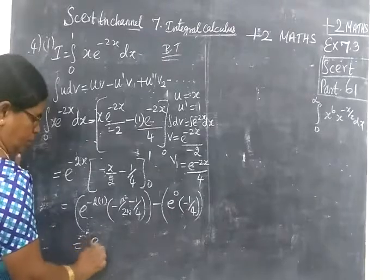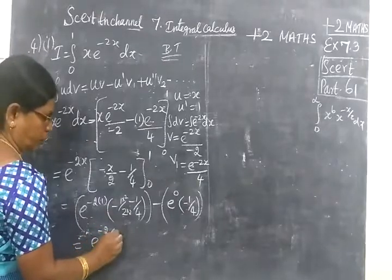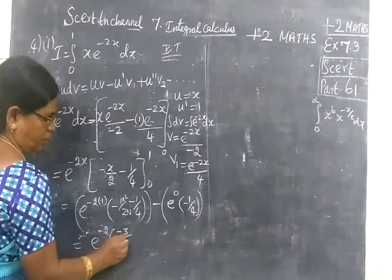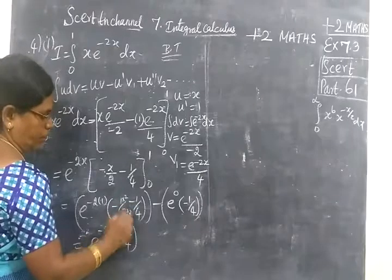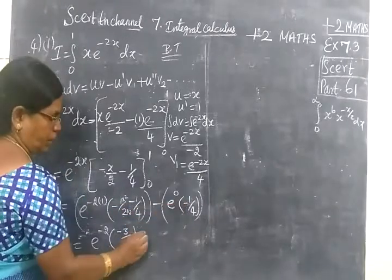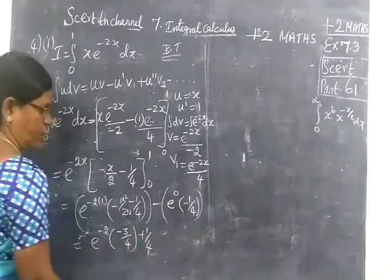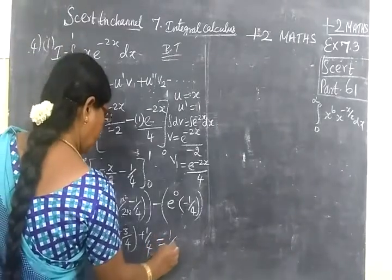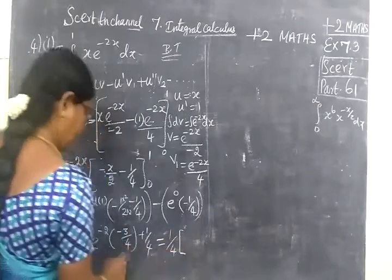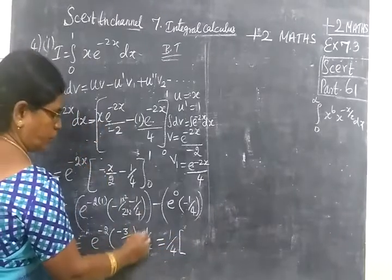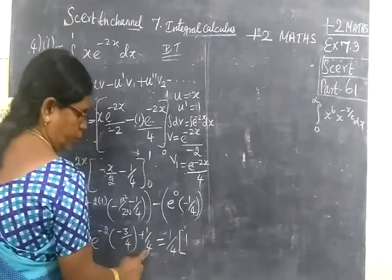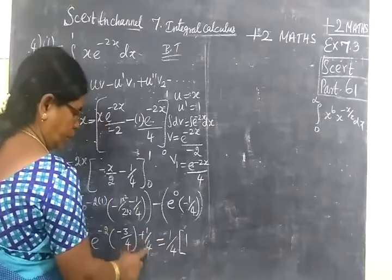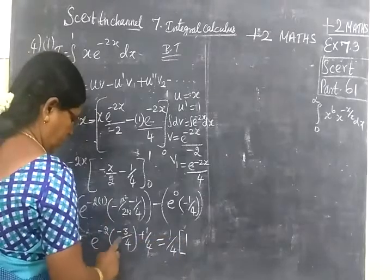So equal to e power minus 2. That is minus 2 minus 1, then minus 3 by 4. This is minus minus plus, so 1 by 4. So 1 by 4 if you take it common. That is 1 by 4 bracket. We have taken 1 by 4 common, then minus 1.